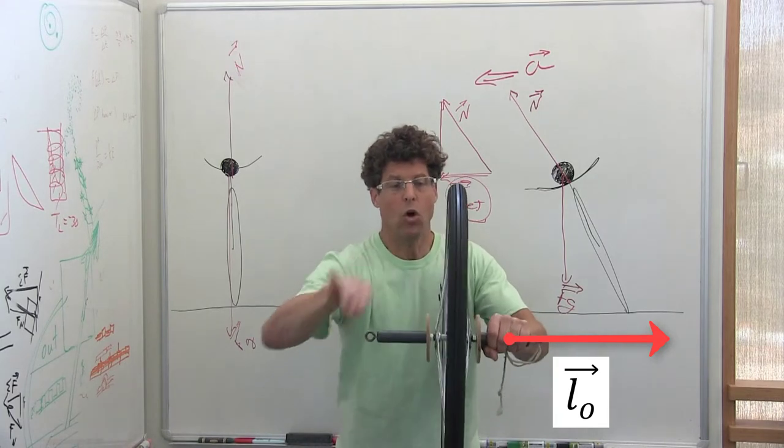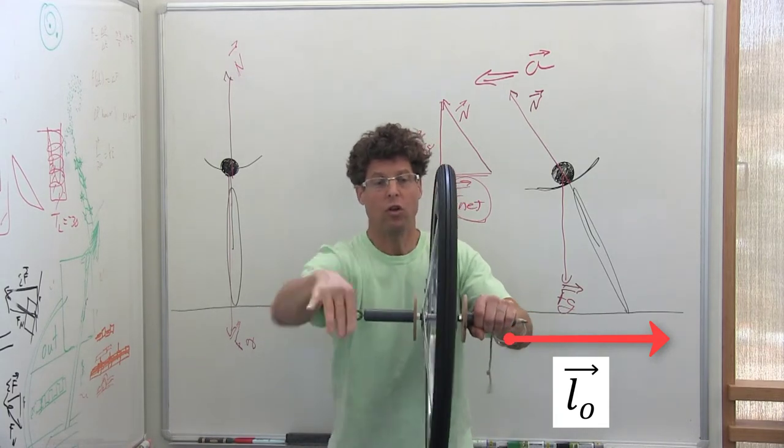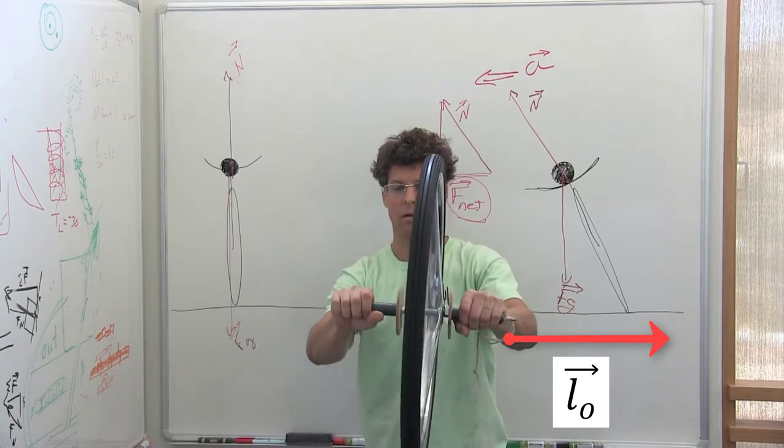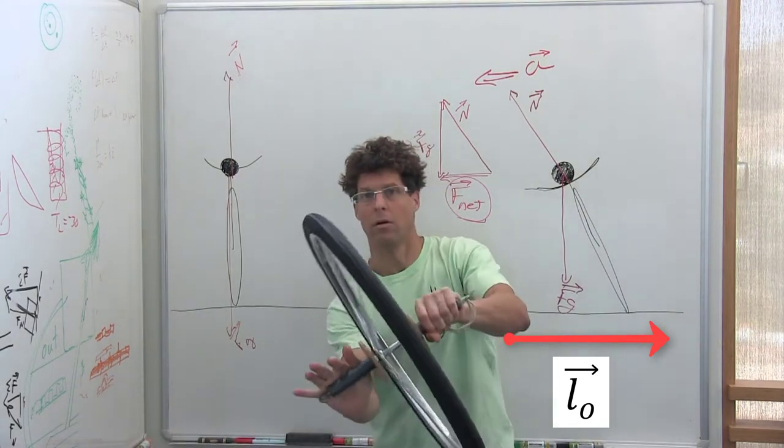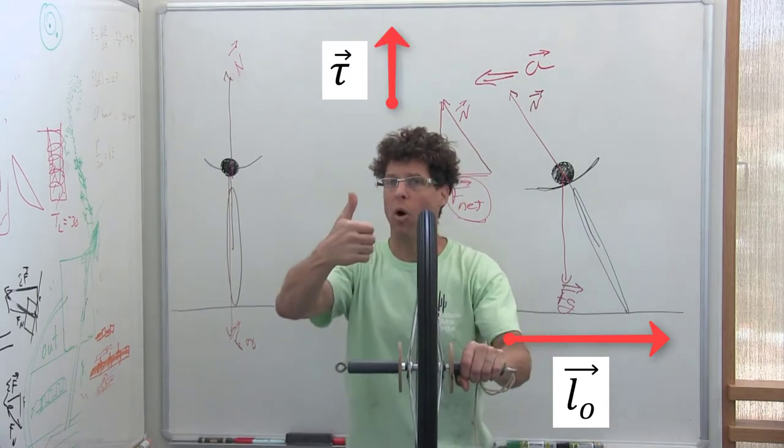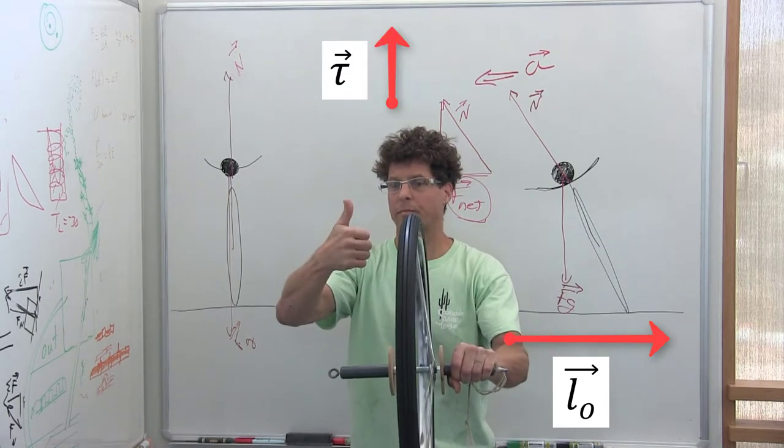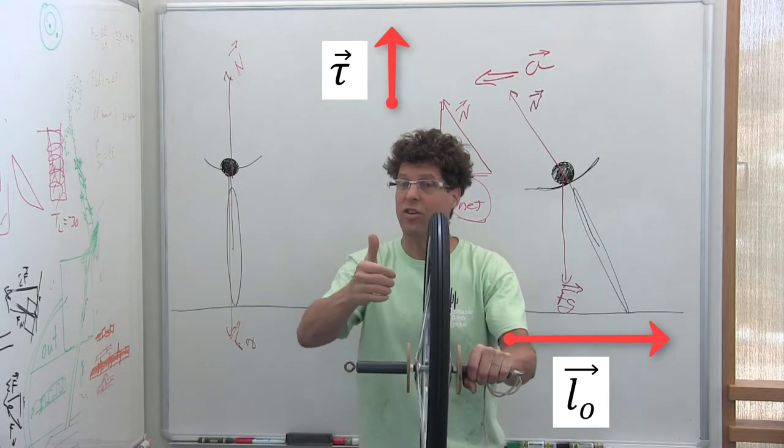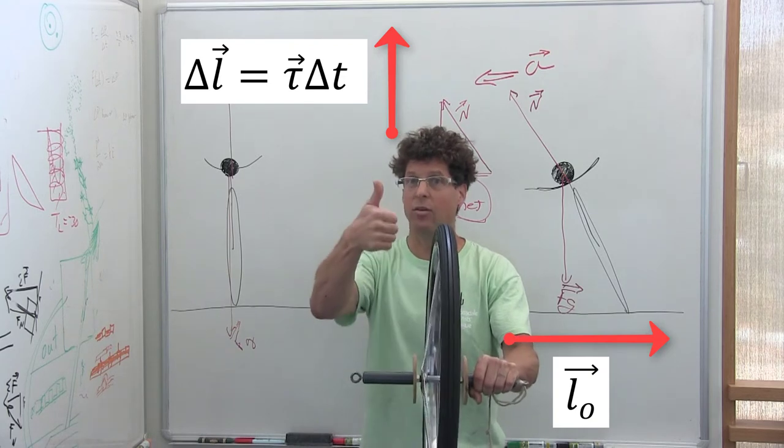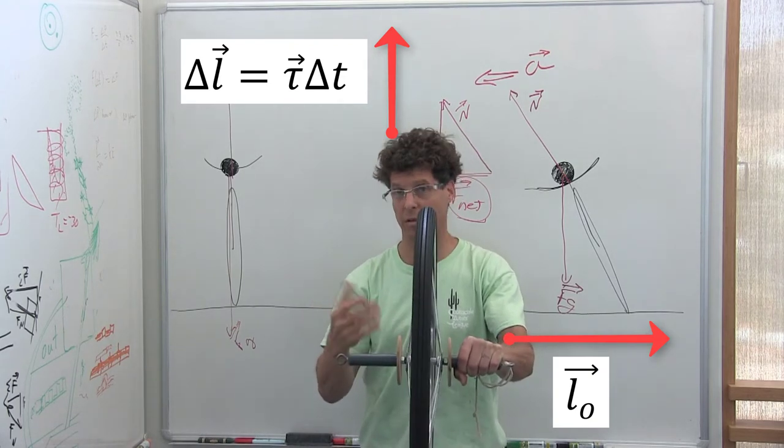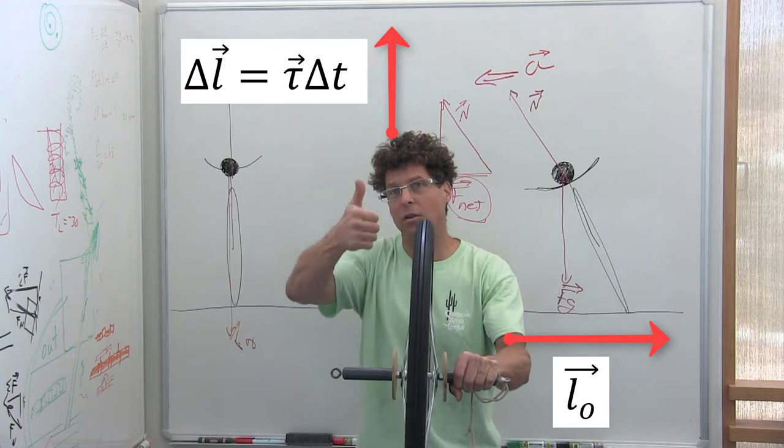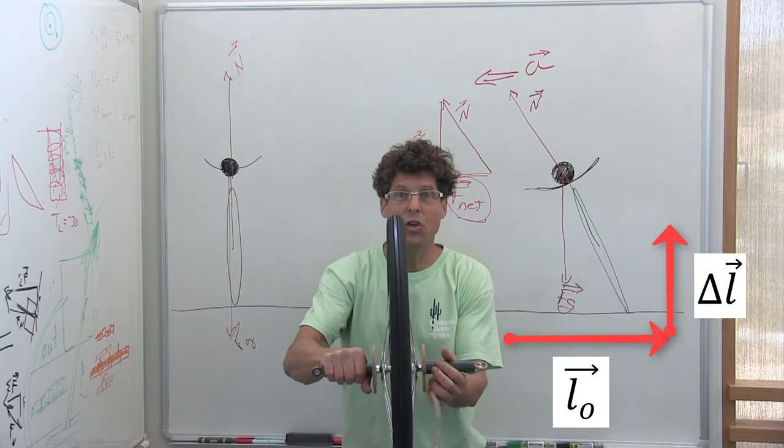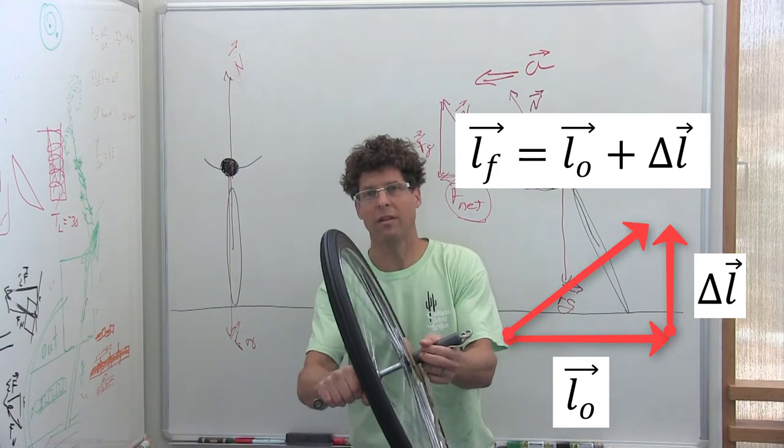And so what happens when you go to turn the wheel in the wrong direction is that that torque from pushing the wheel provides a change in angular momentum because your angular impulse is equal to the torque times delta t, the time. That angular impulse is added to the angular momentum you already have, and you get a new angular momentum in this direction.